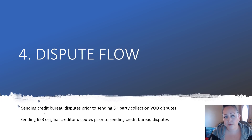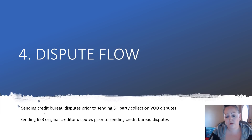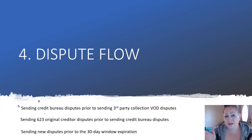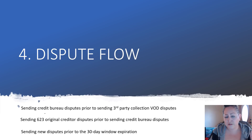Sending Section 623 original creditor disputes prior to sending out your credit bureau disputes — don't do that. Dispute with the bureaus first. You cannot take the creditors to court if you did not dispute with the bureaus first. And sending new disputes prior to the 30-day window expiration — make sure there are 30 days in between. Mark your calendar, use the dates on your dispute letters. Use your brain.